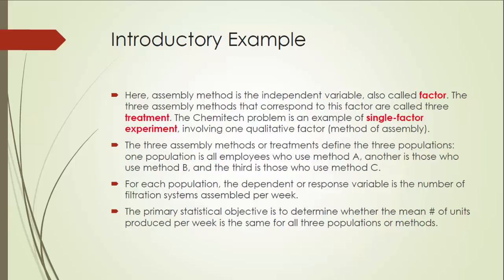The three assembly methods or treatments define the three populations. One population is all employees who use method A, another is those who use method B, and the third is those who use method C. For each population, the dependent or response variable is the number of filtration systems assembled per week. The primary objective is to determine whether the mean number of units produced per week is the same for all three populations or methods — essentially, comparing and testing whether the three population means are equal.